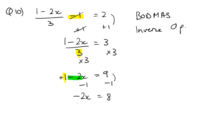Now we need to get rid of the minus 2, so we need to divide both sides by minus 2. And we're left with x equals minus 4 as our solution.